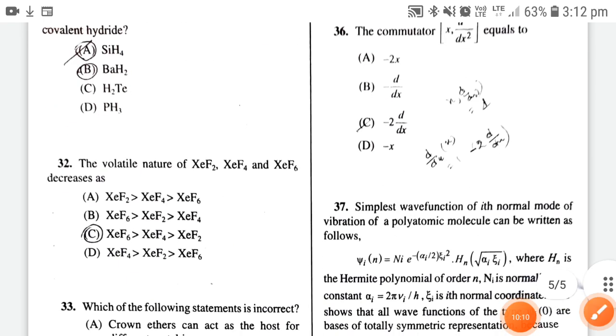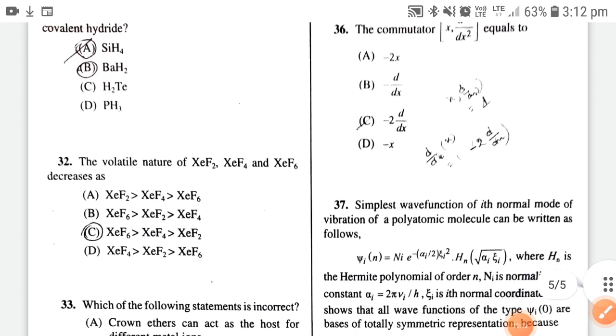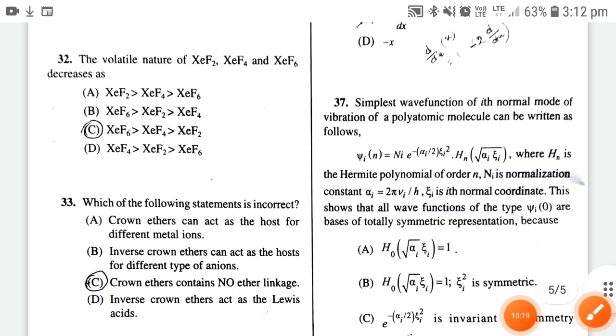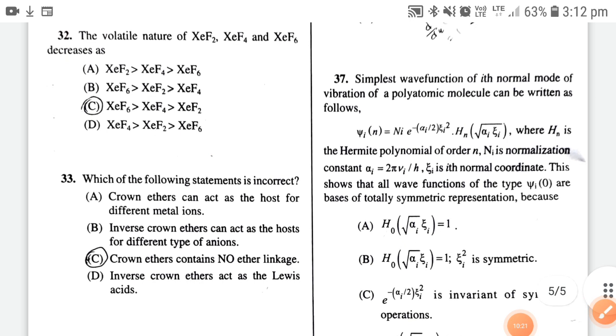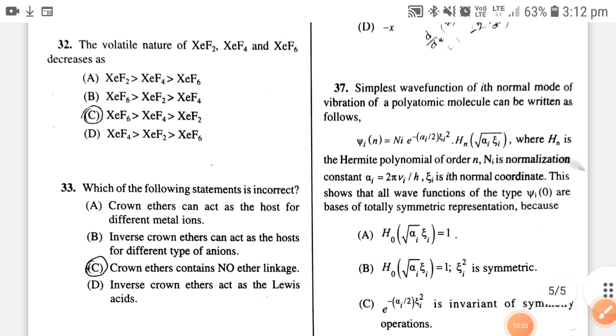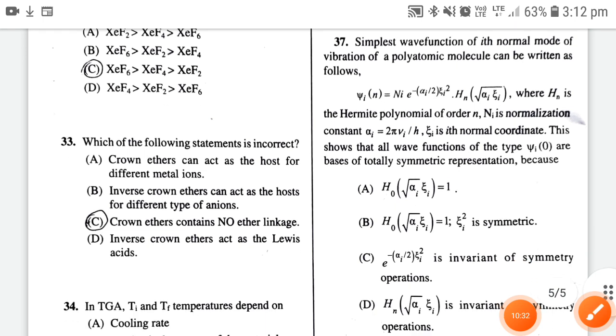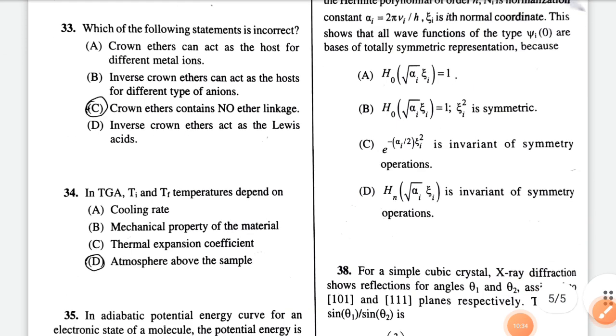The volatile nature of XeF₂, XeF₄, and XeF₆ decreases - the correct option is option C. Crown ethers contain no ether linkage - this is incorrect. Crown ethers only form O-O-R forms.